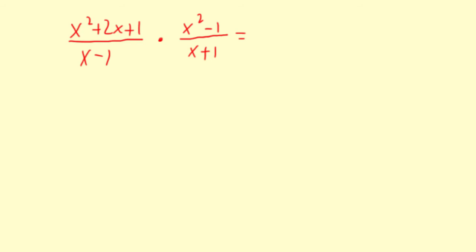So this first one, x squared plus 2x plus 1, that is the same as x plus 1 quantity squared. Then divided by x minus 1, that doesn't factor, times. The numerator factors to x plus 1 x minus 1, that's a sum and difference pattern. Then divided by x plus 1.